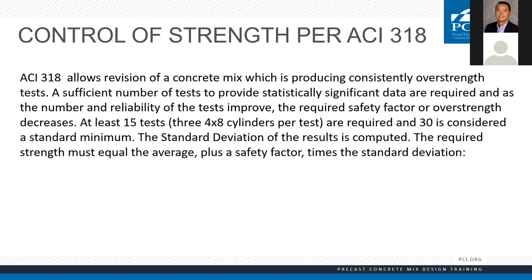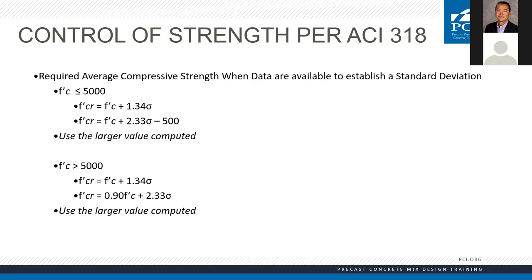We calculate the standard deviation, and there are a couple features it has to meet. This is from ACI 318 — we have to meet the best of these two criteria. For 5,000 PSI design strength or greater, your F'cr (required compressive strength) equals F'c (design strength) plus 1.34 times your standard deviation. You also have to figure 90% of your design strength plus 2.33 times your standard deviation. We do both calculations, and whichever has the larger value, our average must exceed that number.